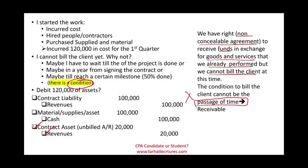This is basically contract asset and contract liability in a nutshell. In this illustration I wanted to explain how it all comes into being — how a contract liability is born and for what reason, how a contract asset is born, and how it goes away.